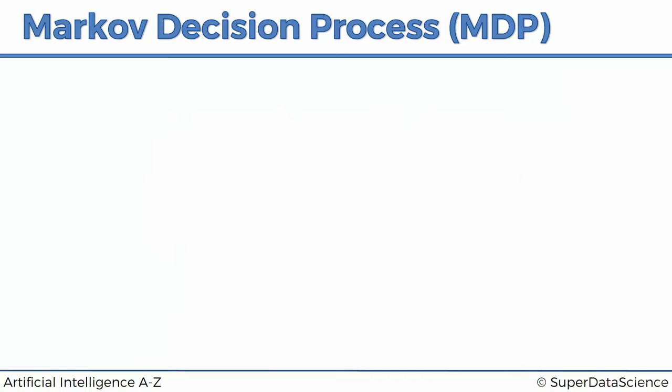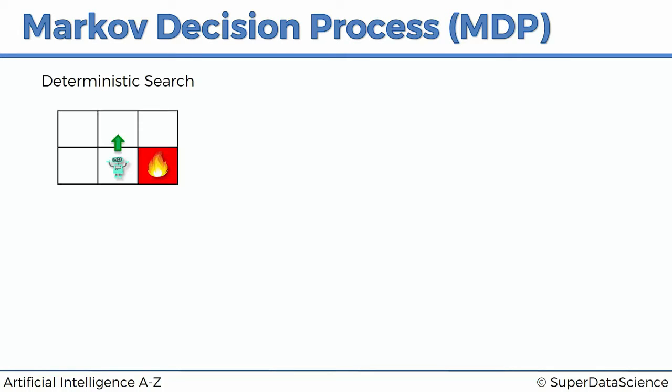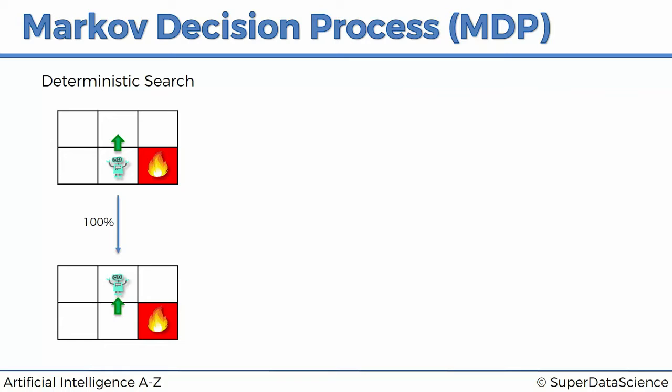This is where a Markov process comes in. But first, we're going to talk about two things: deterministic search versus non-deterministic search. Deterministic search means that if the agent decides to go up, then with 100% probability it will go up. That's exactly what will happen. There are no other options — once it clicks the up arrow, it will go up.